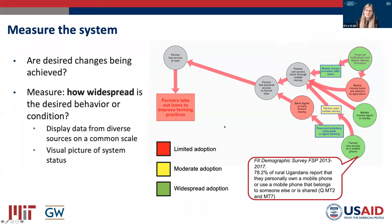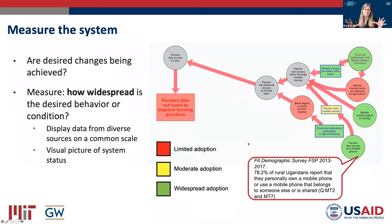The second step is to measure the system. The question we want to ask here is: are the desired changes being achieved? Each element in this map represents something like a behavior by an actor or a condition of the system that might need to change in order to achieve this key outcome. This map measures how widely adopted those changes or behaviors or conditions are. For example: farmer has access to a mobile phone — a survey shows that almost 80% of rural Ugandans have access to a mobile phone, so this is colored green to indicate widespread adoption. The advantage of this kind of visualization is that it shows diverse data from different sources on a common scale, making it easier to see where change is succeeding and where it is stalled across the entire system.